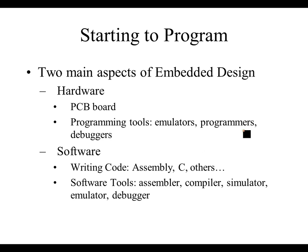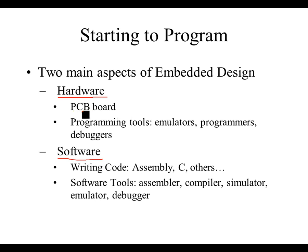Starting to program — there are two main aspects of embedded design: the hardware portion and the software portion. With the hardware portion, you're going to need to do a PCB board design. That means you're going to actually have to make some physical board that's going to go inside of a device, like packaging. You'll need a PCB board design with a microprocessor chip on it, some LEDs, a display, a Wi-Fi module — something like that — in order to actually have your electronics hardware.